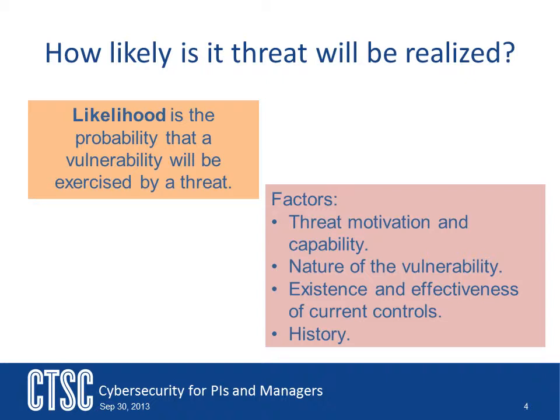Factors that enter into this are: What are the motivations and capabilities of the threat? There might be a vulnerability in existence in the system, but the threat is very minimal because no one really cares about it, or there is really no motivation to exploit that particular vulnerability. What is the nature of the vulnerability? It could be something like an unlocked door. Are there effective controls already in place, or planned to be in place, that might already be mitigating that particular risk? And the history — looking at whether these threats and vulnerabilities have been exploited in the past.